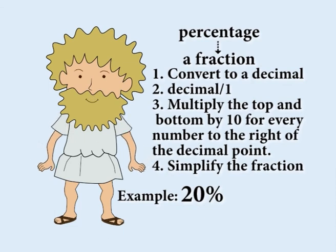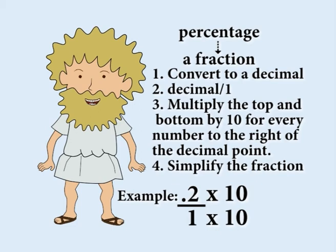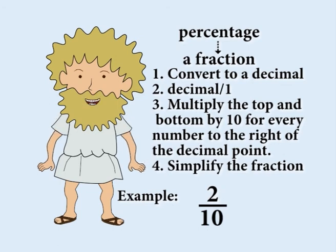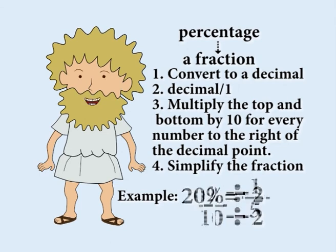For example, to convert 20% to a fraction, first move the decimal point two places to the left to get the decimal 0.2. Now multiply the top and bottom of 0.2 over 1 by 10 to get the fraction 2 tenths. Finally, to simplify the fraction, divide the numerator and denominator by 2 to get the fraction 1 fifth.